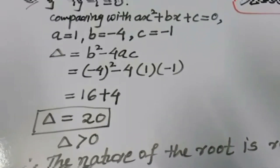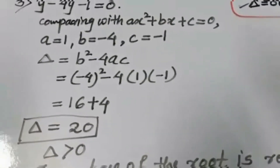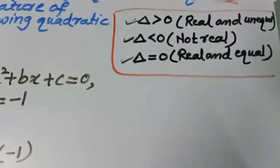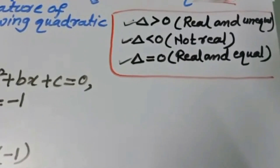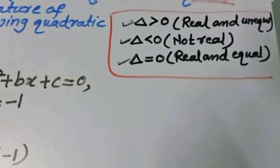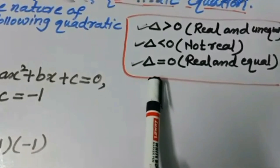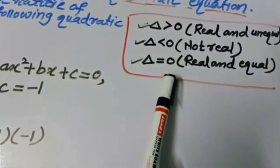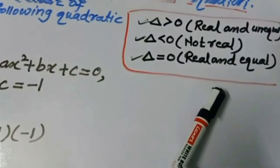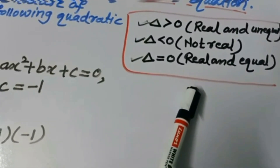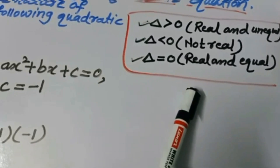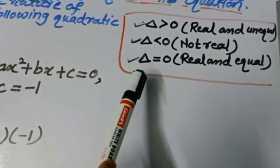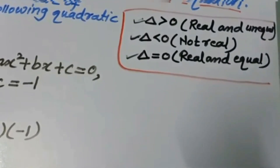So students, memorize the formula delta = B² - 4AC and these 3 conditions. First, if delta > 0 (positive), the nature of the root is real and unequal. Second, if delta < 0 (negative), the nature of the root is not real. Third, if delta = 0, the nature of the root is real and equal. These are sufficient to determine the nature of the root of any quadratic equation.